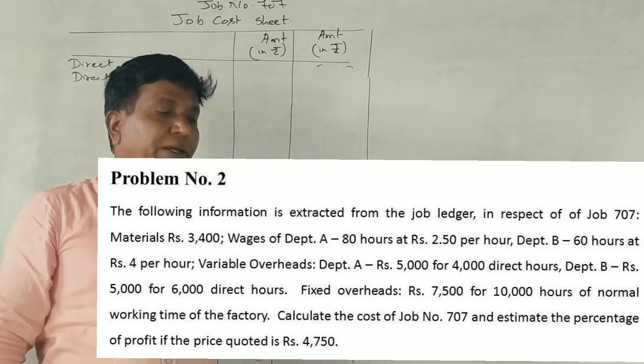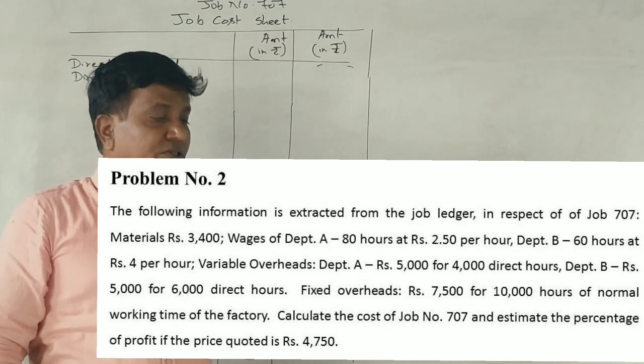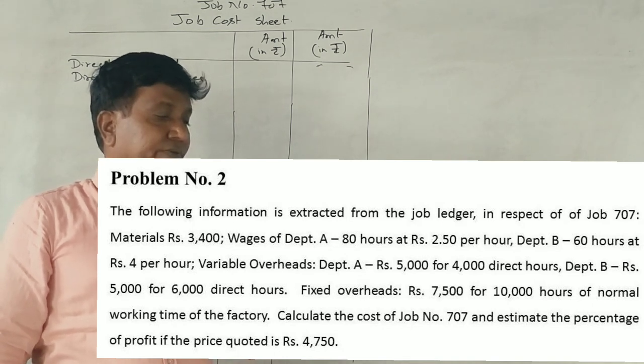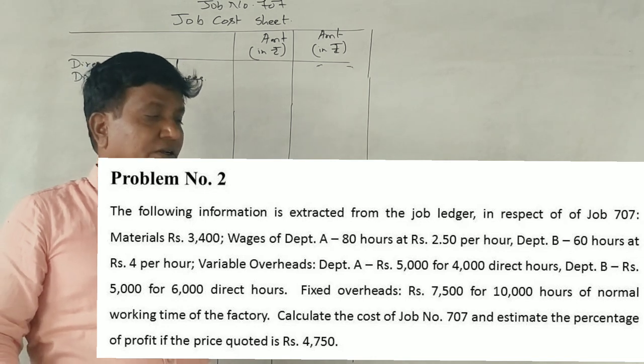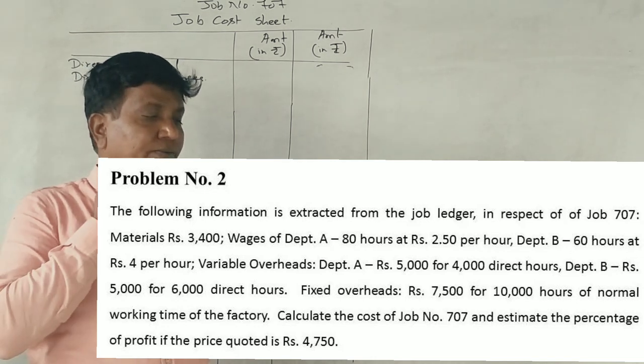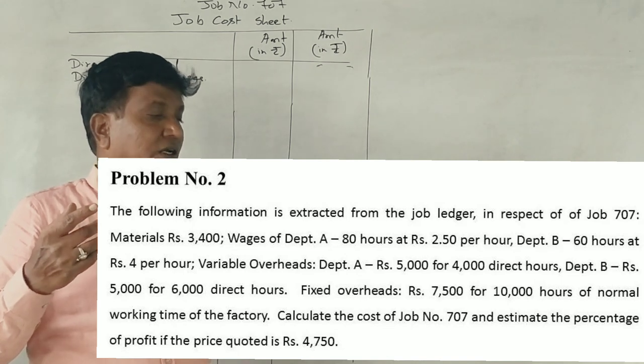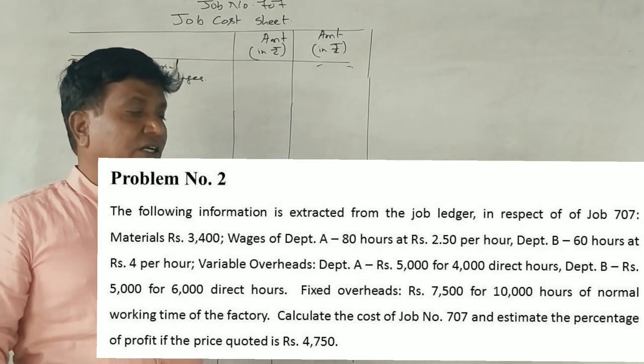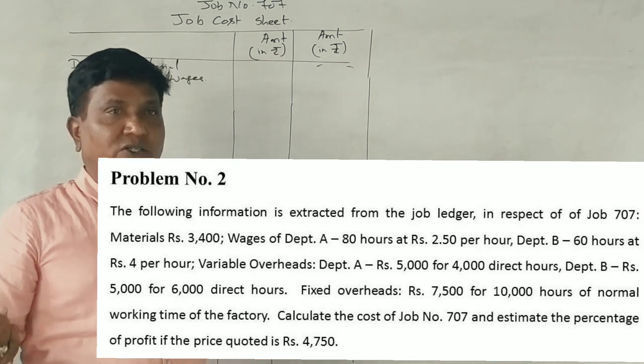Department B: 60 hours at 4 rupees per hour. Variable overheads: Department A Rs. 5,000 for 4,000 direct hours. Department B: Rs. 5,000 for 6,000 hours.